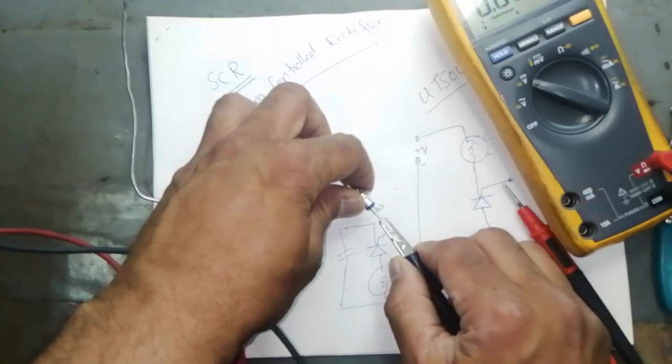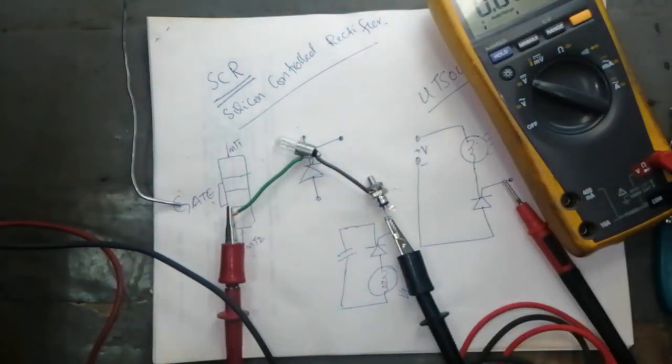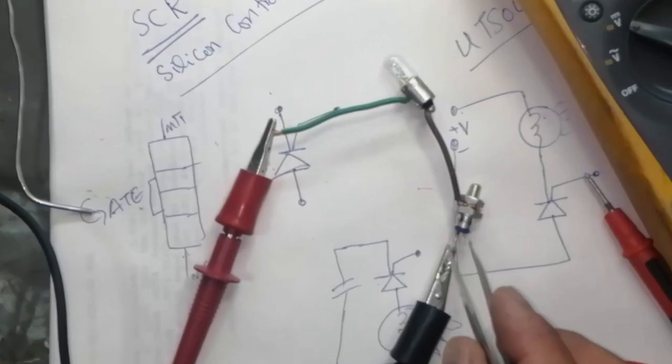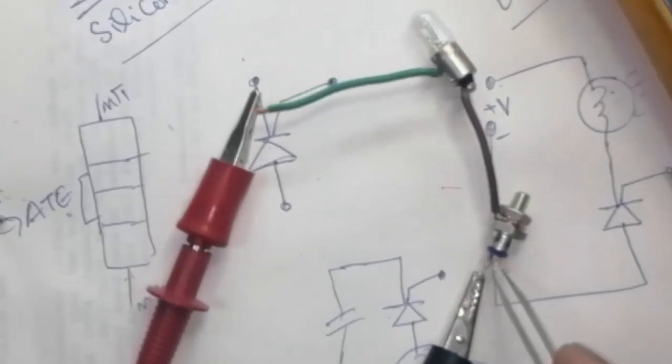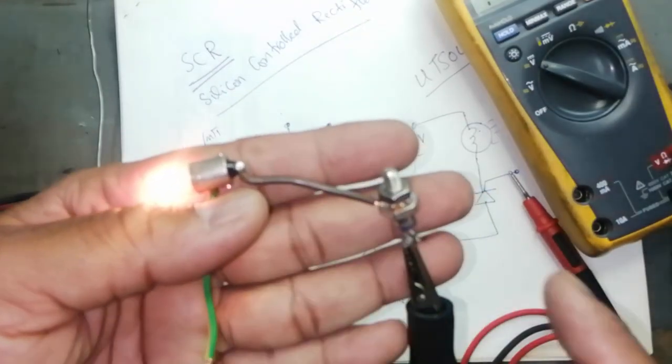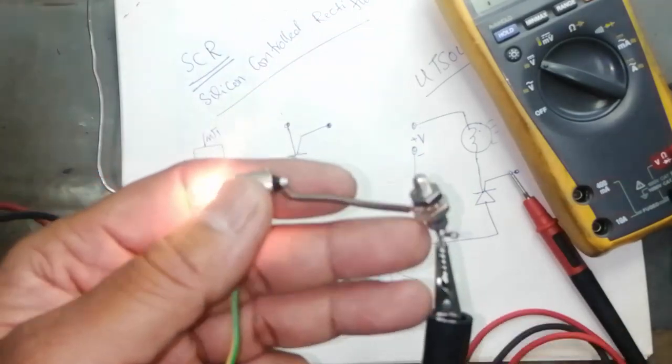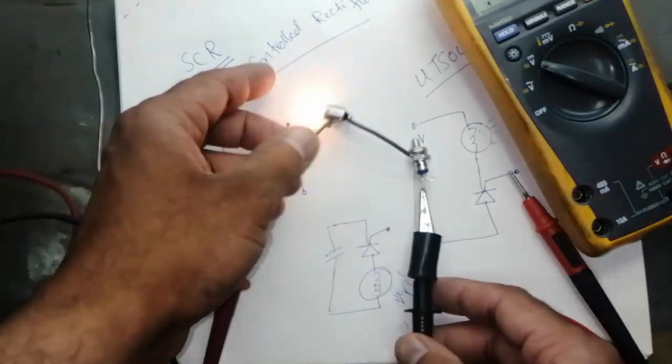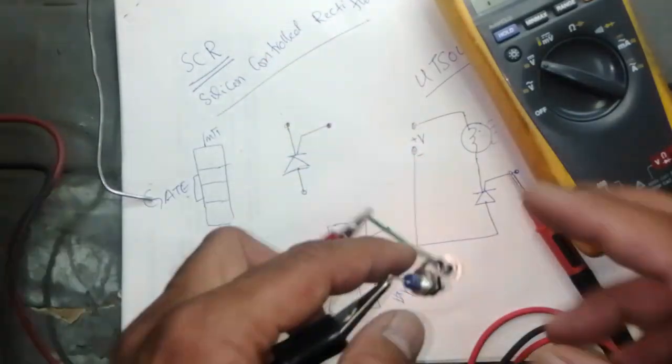Once it is triggered, after that it is functional. We can see it's okay now. So you can test any SCR like this. Go to internet, search the part number which is written on the SCR.